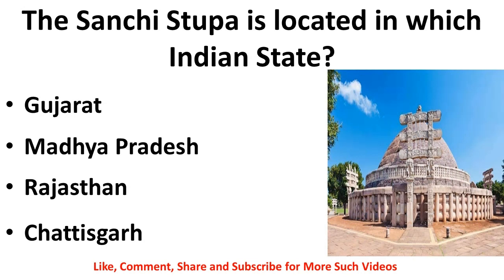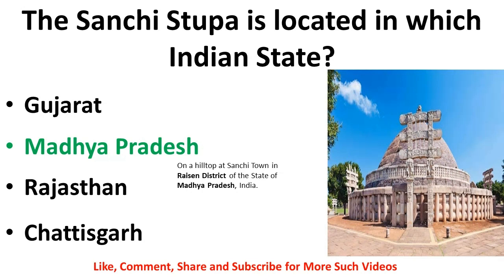The Sanchi Stupa is located in which Indian state — Gujarat, Madhya Pradesh, Rajasthan, or Chhattisgarh? The correct answer is Madhya Pradesh — on a hilltop in Sanchi town in the Raisen district of Madhya Pradesh. Note: both Bhimbetka rock shelters and Sanchi Stupa are located in the Raisen district of Madhya Pradesh. Please remember these two points.